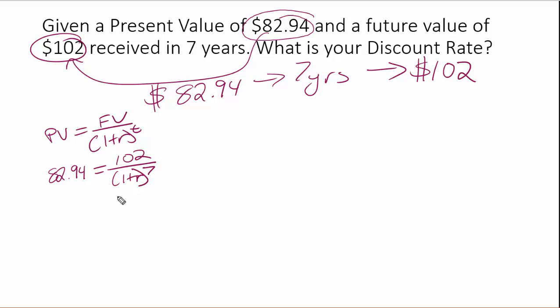And then when we do a little bit of solving, a little bit of manipulation here, this algebra is basically going to be equal to R is equal to the seventh root of the 102 divided by 8294.